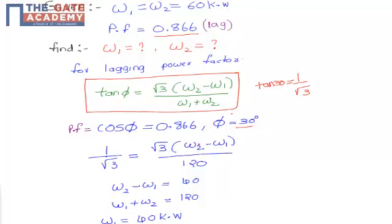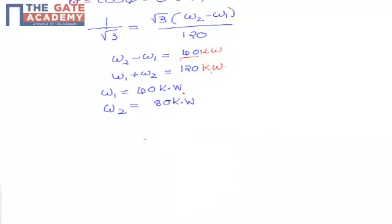W1 + W2 = 60 + 60 = 120 kilowatts. After calculation, W2 − W1 = 40 kilowatts. Solving the two equations — W2 − W1 = 40 kW and W1 + W2 = 120 kW — we get W1 = 40 kilowatts and W2 = 80 kilowatts.